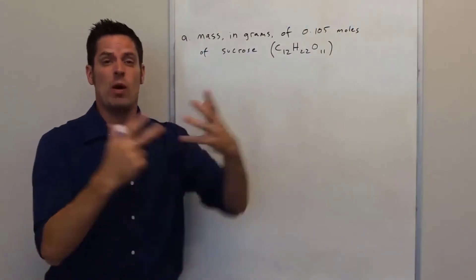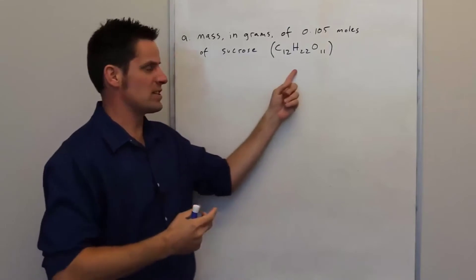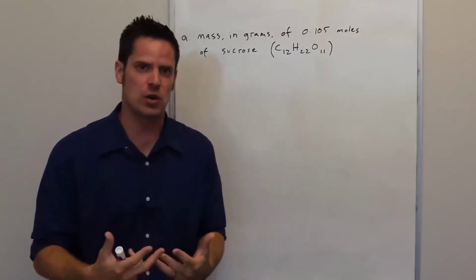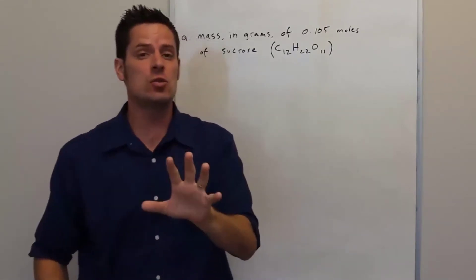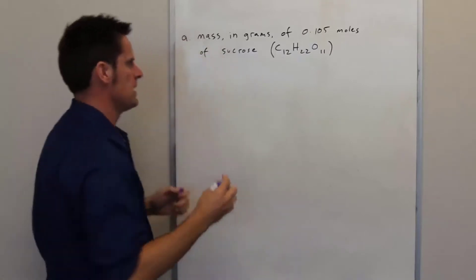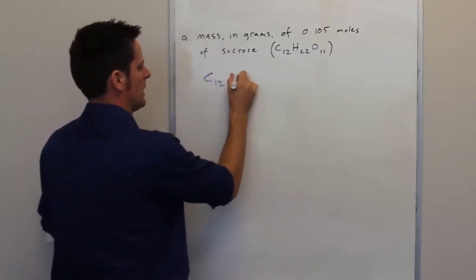To convert 0.105 moles of sucrose, which has this formula, into grams of sucrose, we first of all need to get sucrose's molecular weight. Let's go ahead and write out its formula here.